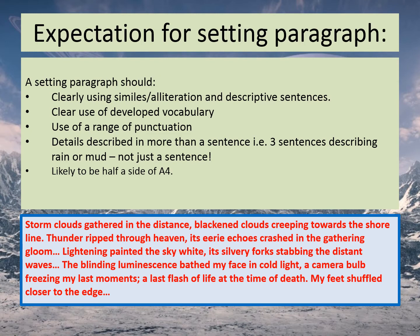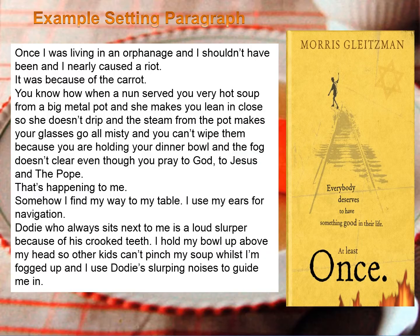You can see an example there on the bottom describing a thunderstorm — the vocab choices, the range of punctuation. Here's another example taken from the novel Once by Morris Gleitzman, describing an orphanage and someone's experience in it. Notice the paragraphs are split up, some sentences left on their own almost as individual paragraphs. It puts you right into the story and begins to describe from the character's perspective what's going on around them.